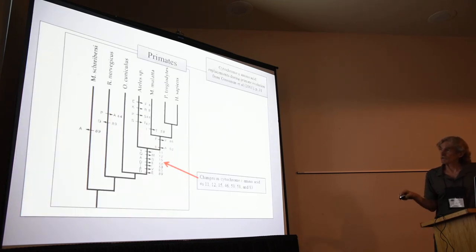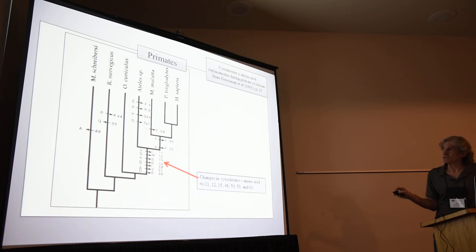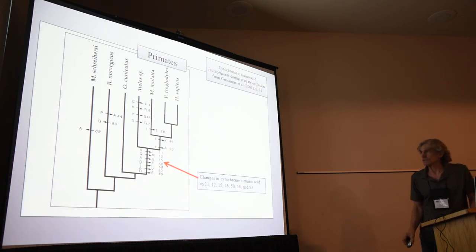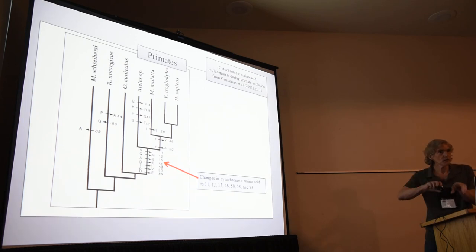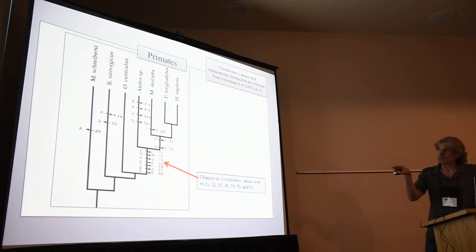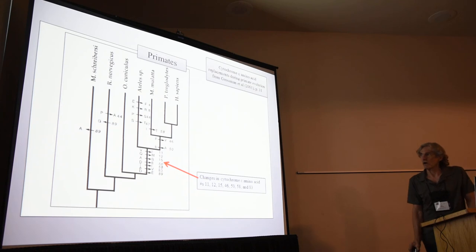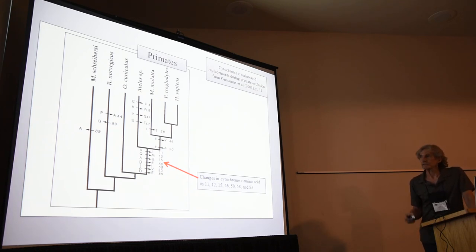Even more specifically, in a paper in 2001, you can see the list here, which is exactly the list of changes in the lineage leading to humans. In other words, those changes were already specified and pointed out — so it's not like they're after the fact.